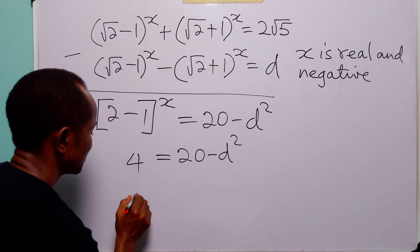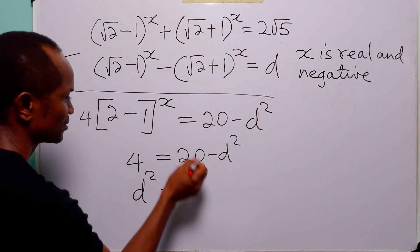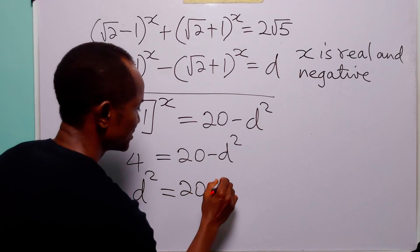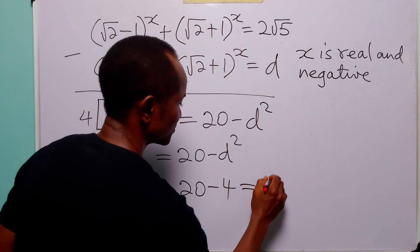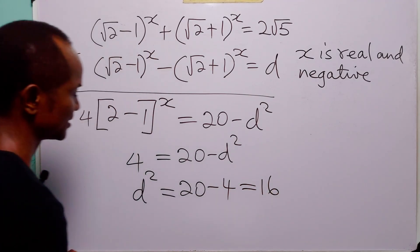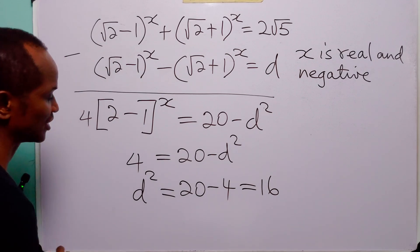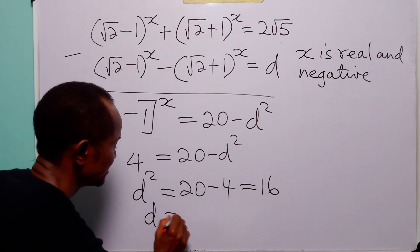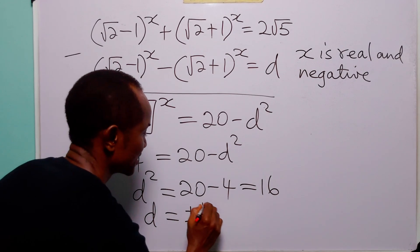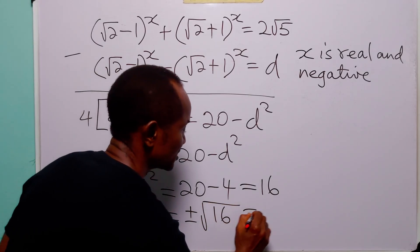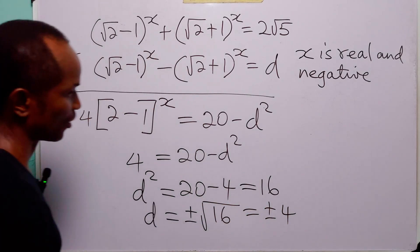Rearranging this equation, we have d² equal to 20 minus 4, which is equal to 16. Taking the square root of both sides, we have d equal to plus or minus √16, which is equal to plus or minus 4.